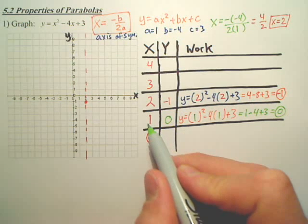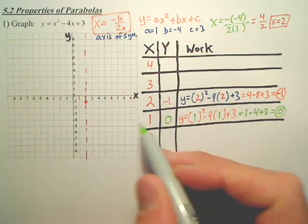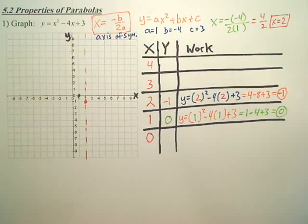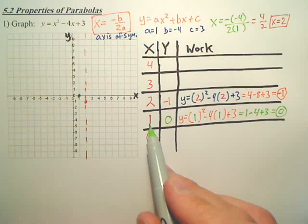Now, my coordinate is 1, 0. Over 1, up 0. That is my first coordinate of the problem.